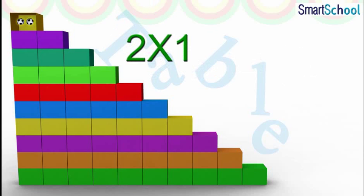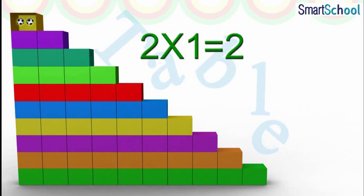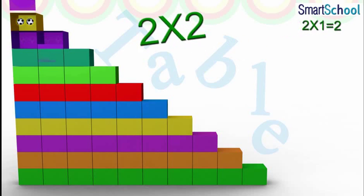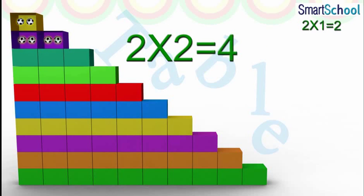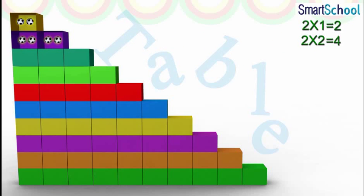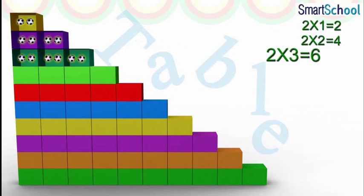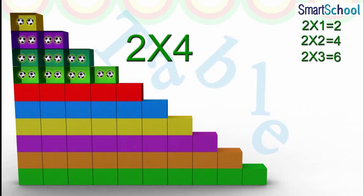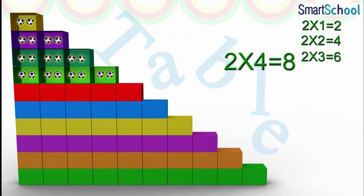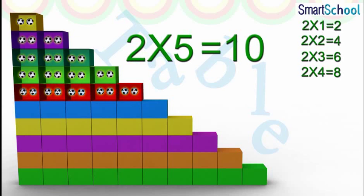Two into one is two. Two into two is four. Two into three is six. Two into four is eight. Two into five is ten.